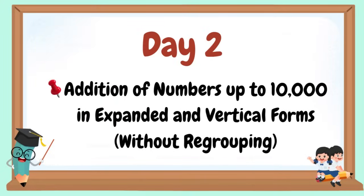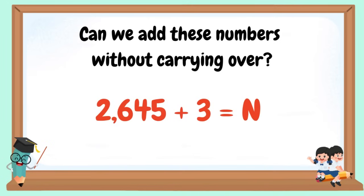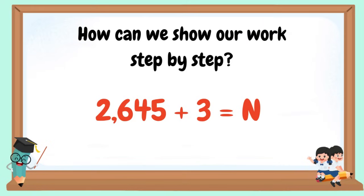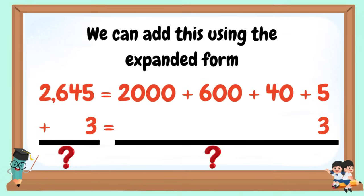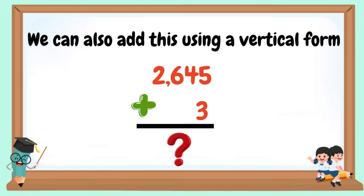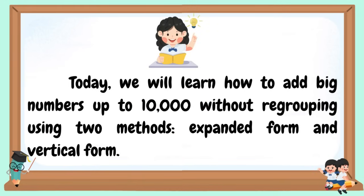Welcome to our Day 2: Addition of numbers up to 10,000 in expanded and vertical forms without regrouping. Can we add these numbers without carrying over? How can we show our work step by step? We can add using the expanded form and also using vertical form.